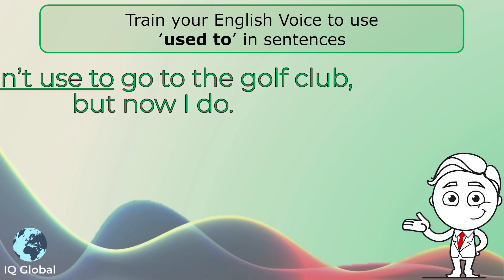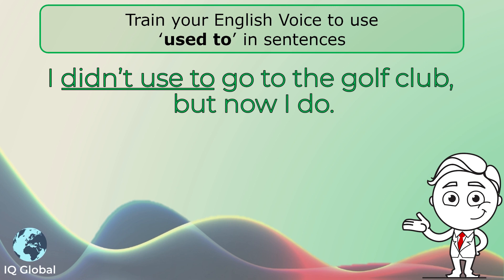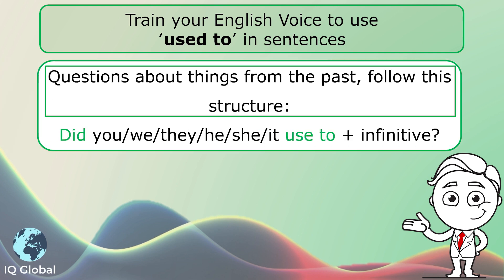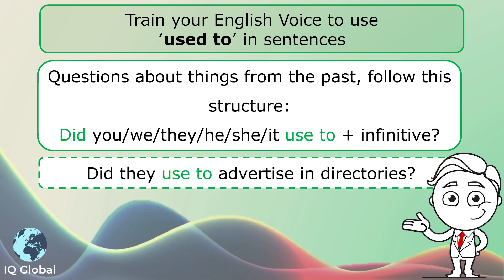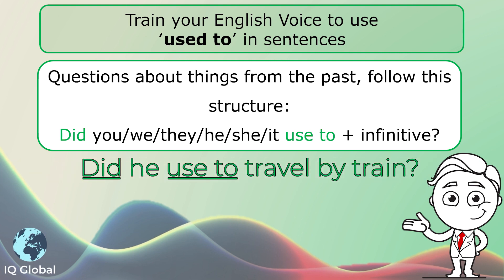Another example: I didn't used to go to the golf club, but now I do. Questions about things from the past follow this structure: Did you, we, they, he, she or it — used to plus infinitive? For example: 'Did they used to advertise in directories?' Or another example: 'Did he used to travel by train?'